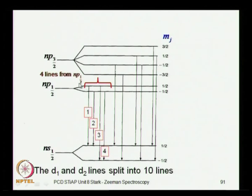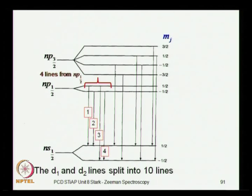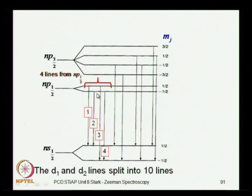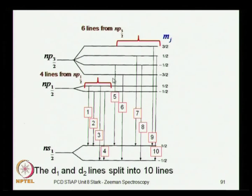There are 4 lines coming from np1/2 corresponding to the dipole selection rules. The np1/2 is no longer a single level — there are 2 of these. Two lines come from the upper level corresponding to MJ = +1/2, and lines 2 and 4 come from the lower level corresponding to MJ = -1/2. The transition from np3/2 splits into 6 lines, and these are the 6 lines which come from the np3/2 levels — all transitions corresponding to the dipole selection rules.